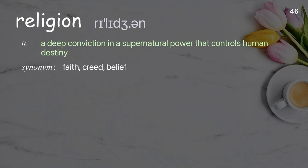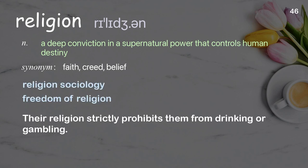Religion: a deep conviction in a supernatural power that controls human destiny. Examples: religion sociology, freedom of religion. Their religion strictly prohibits them from drinking or gambling.